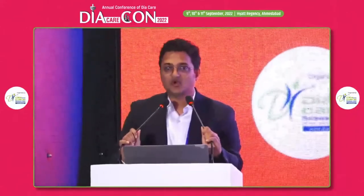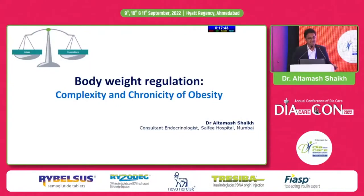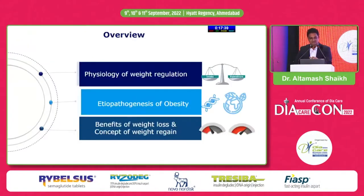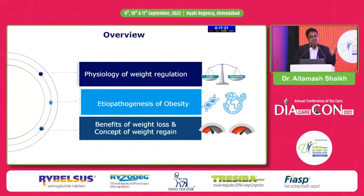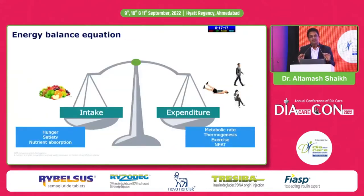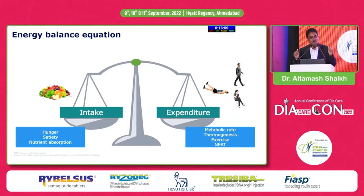Thank you so much. Good afternoon everybody. We have a very complex topic but we'll try to have a simple understanding of how body weight is regulated — the patient's journey through the chronicity of obesity and the molecules involved. What is normal? A simple equation: intake should be equal to expenditure. The key pointers we'll talk about are hunger, satiety, and nutrient absorption.